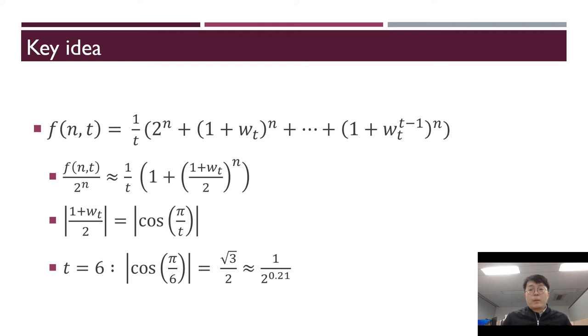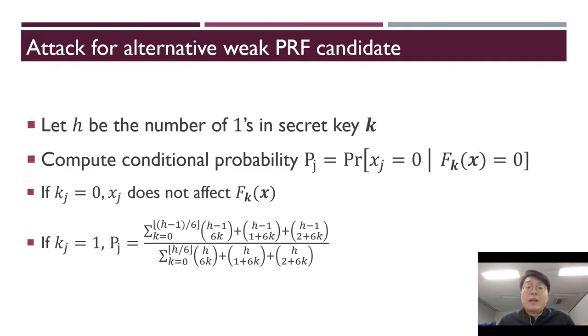We can present the value of f by t-th roots of unity. When f is divided by 2^n, it has difference to 1 out of t. The difference is determined by the absolute value of (1 + ω)/2, which equals cosine(π/t). When t is 6, it is √3/2.